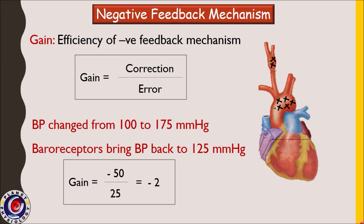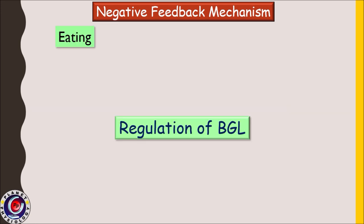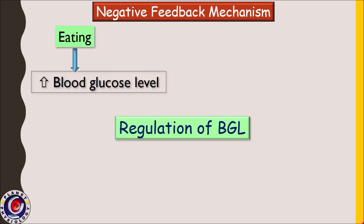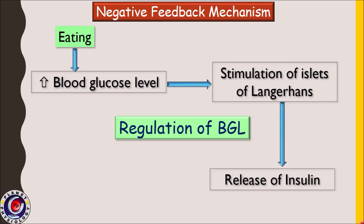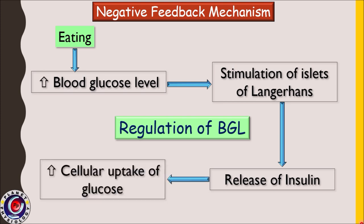Another example of negative feedback is the regulation of blood glucose level. As we eat, our blood glucose level rises. This is detected by the islets of Langerhans in the pancreas, causing the release of insulin. Insulin increases cellular glucose uptake and hence decreases the blood glucose level.